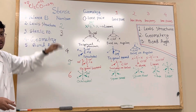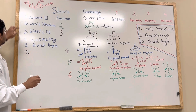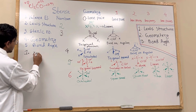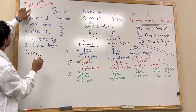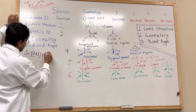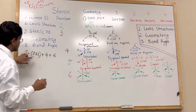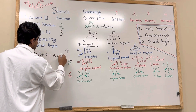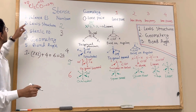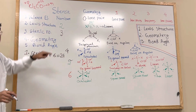For the Lewis structure, we need to find the valence electrons. Chlorine has seven valence electrons, seven times two because there are two chlorines. Carbon has four valence electrons. Oxygen has six valence electrons. So in total, there are 24 valence electrons.